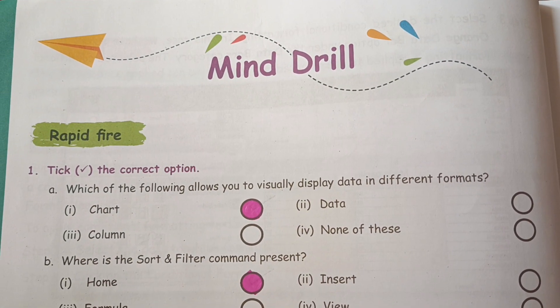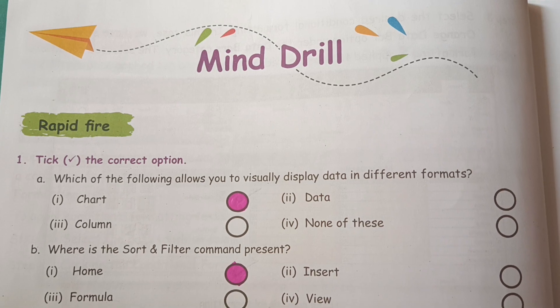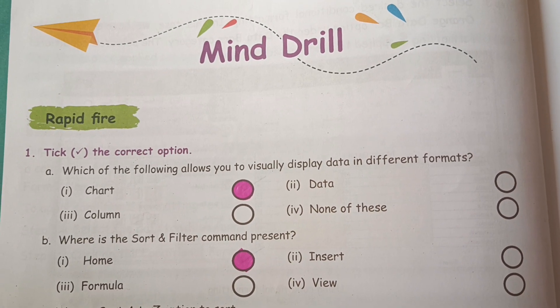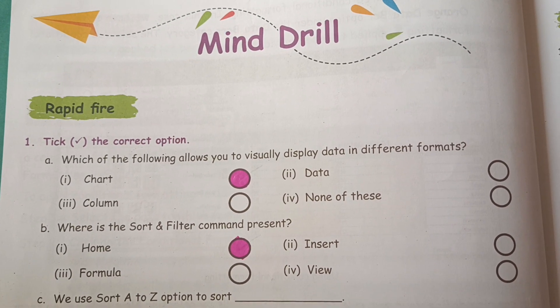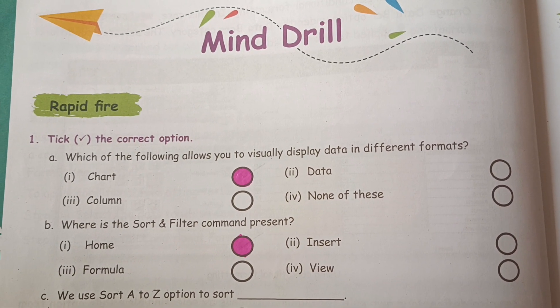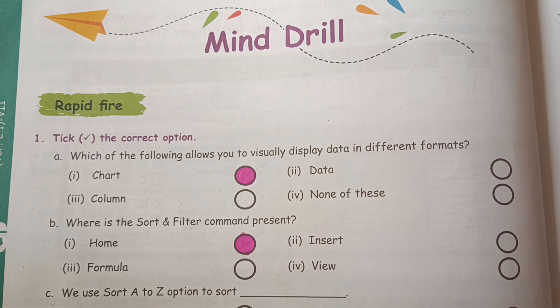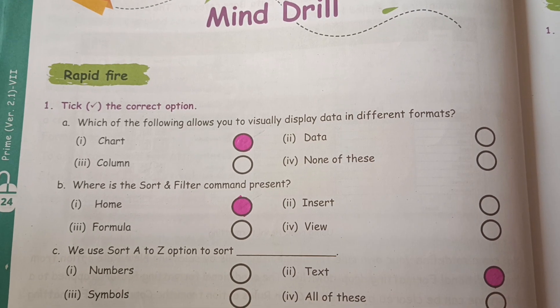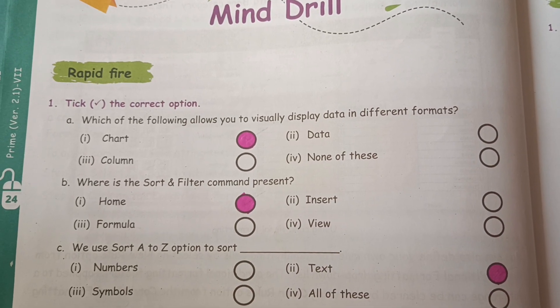Where is the sort and filter command present? It is in Home. We use the sort A to Z option to sort text.